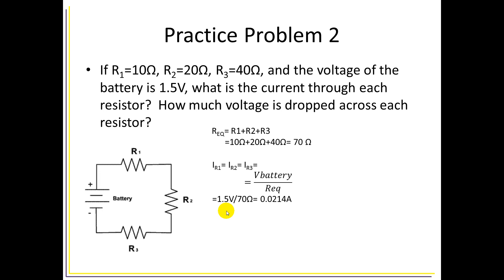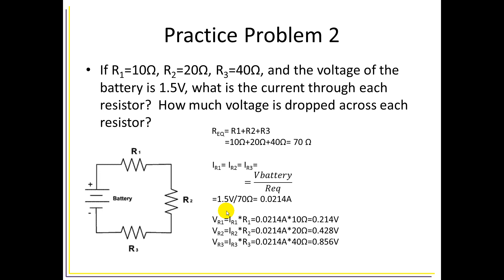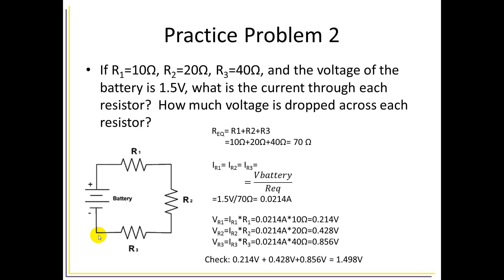Now that we've figured out the current — the same through all resistors — we can again use Ohm's law to figure out the voltage dropped across each resistor. The voltage across R1 equals the current through R1 multiplied by R1's resistance, and we do the same for R2 and R3. All the currents are the same, and we multiply by the different resistances to get different voltage drops. To check ourselves using Kirchhoff's voltage law, the sum of all voltage drops must equal the battery voltage. Adding them up gives us 1.498 volts — which, accounting for rounding error, balances out with our 1.5-volt battery.